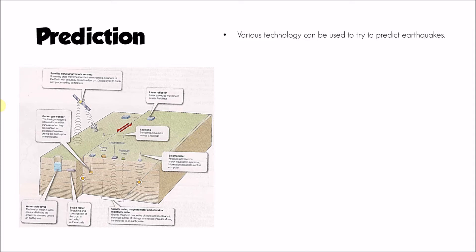If we consider how we might go about predicting an earthquake, there are various technologies that can be used to detect very subtle changes in the Earth's crust. We can monitor changes in the rise and fall of ground level using satellite imaging, detect changes in the level of the water table, or detect changes in the release of radon gas — a gas released from rocks under pressure, where a rise in radon levels can indicate an earthquake is about to happen.